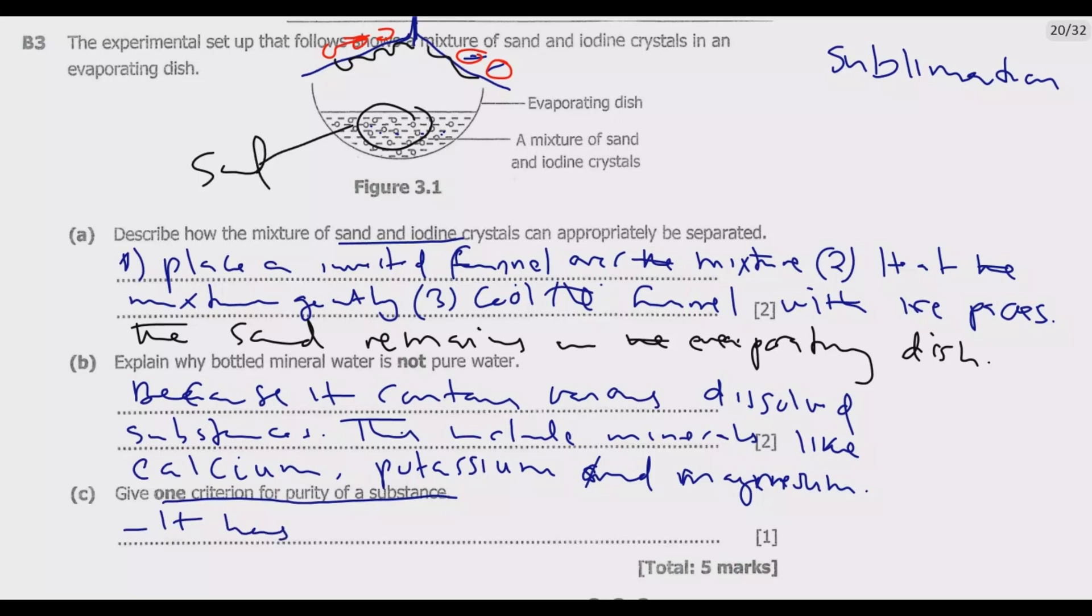Impure substances have a range of melting or boiling points. Other possible answers you can give: they have uniform composition.